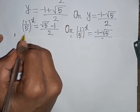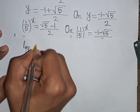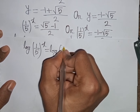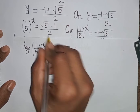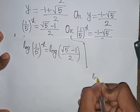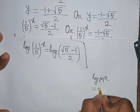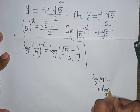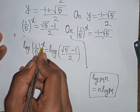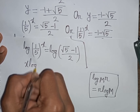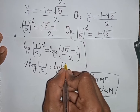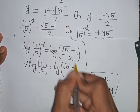Now we take log on both sides: log((1/5)^x) = log((√5 − 1) / 2). Applying the rule log(m^r) = r·log(m), the power x moves to the front, giving x·log(1/5) = log((√5 − 1) / 2).